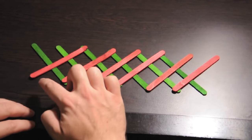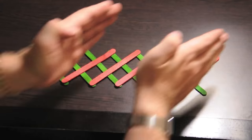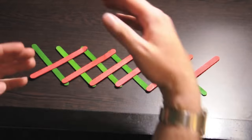with the two colored sticks you can easily tell that these red popsicle sticks are all parallel and all going that way, and the green popsicle sticks are all parallel and they're all headed this way.